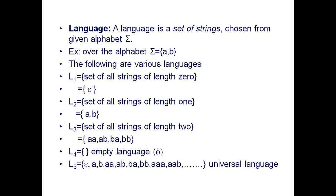Empty language: you should not write any symbol, not even epsilon. Empty string epsilon has length 0 but empty language is different — it should contain no strings at all. This is called empty language, denoted with the empty set symbol phi (∅).